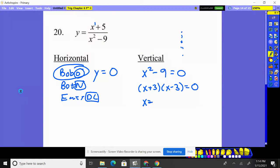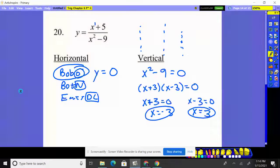So you set it equal to zero, set it equal to zero. You're going to get negative three here, and you're going to get positive three there. So there's going to be two. There's going to be one at negative three and another one at positive three for your vertical asymptotes.